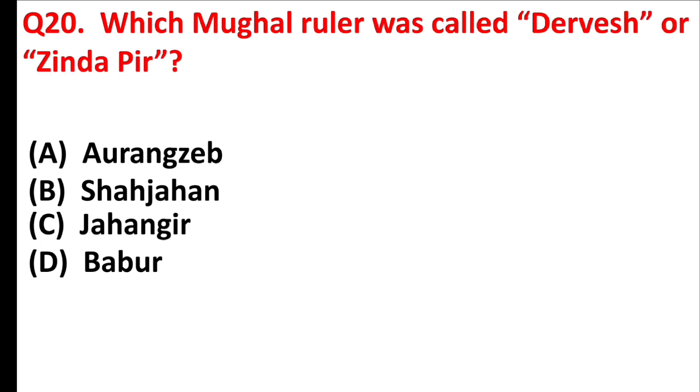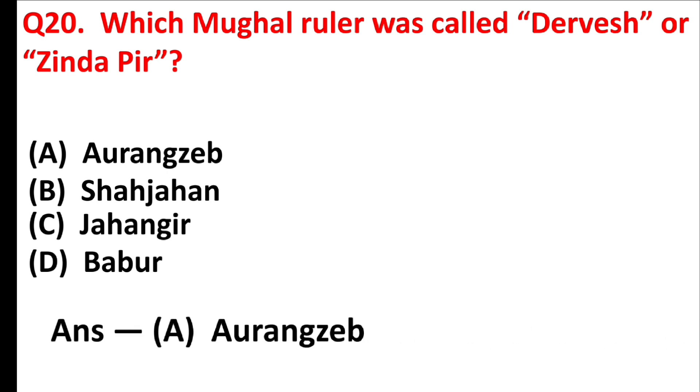Which Mughal ruler was called Darvesh or Zinda Pir? Answer is Option A: Aurangzeb.